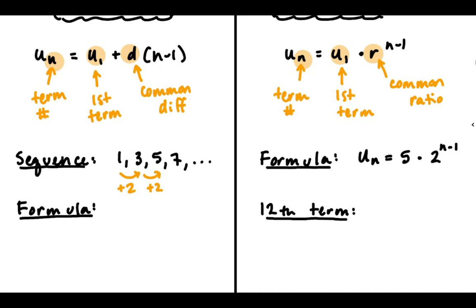We know that u_1 for this sequence is 1, and our common difference equals 2. I'm going to plug those into the formula. So this is 1, this is 2. Our formula is u_n equals first term plus common difference times n minus 1. Here are the numbers we plugged in that are particular to this sequence.